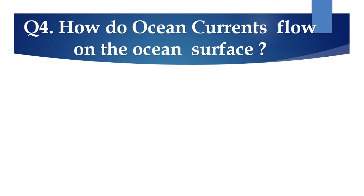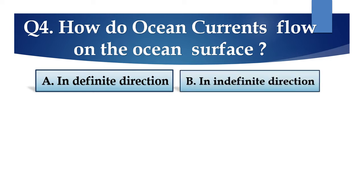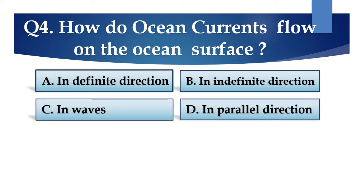Question number 4: How do ocean currents flow on the ocean surface? Options are: A. In definite direction, B. In indefinite direction, C. In waves, or D. In parallel direction.